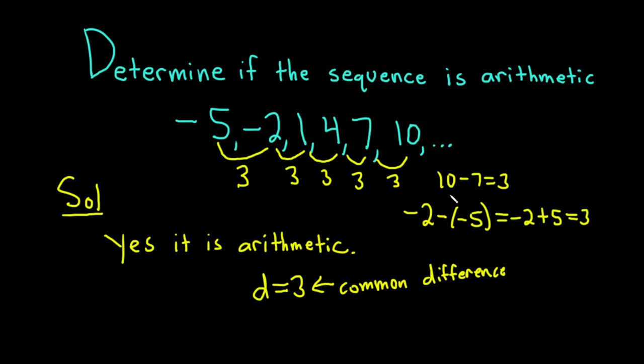So whenever you have a common difference for a sequence like this, you have what's called an arithmetic sequence.